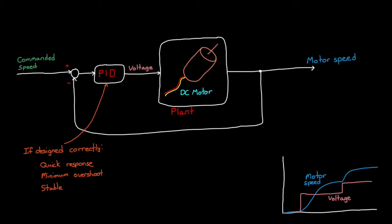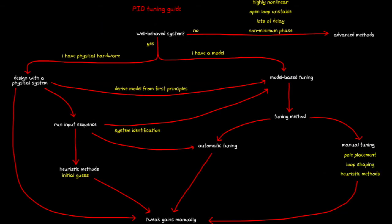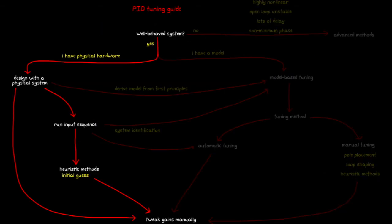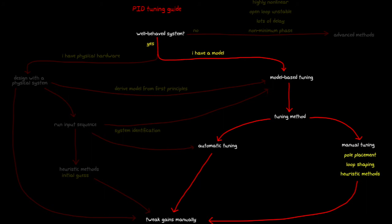Now we could just use the hardware and guess at some PID gains, run it to see how it does, and then tweak them as necessary. That's this left portion of the flowchart. This guess and check method might work, but we have so many other options available to tune the controller if we have a mathematical model of the system. So with that in mind, let's go through a few ways to generate a model of this DC motor.